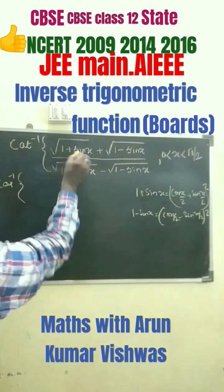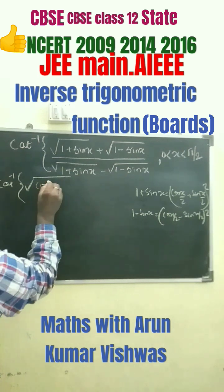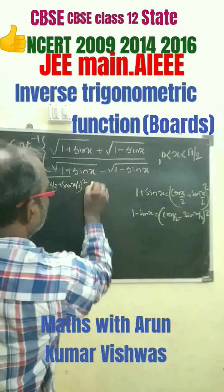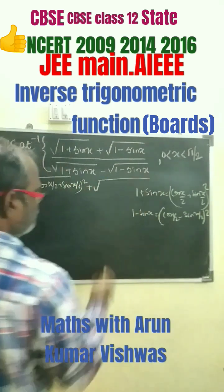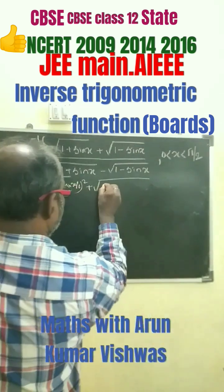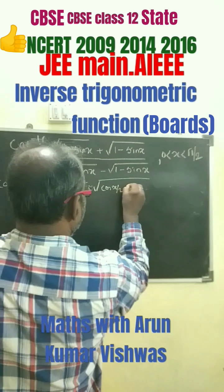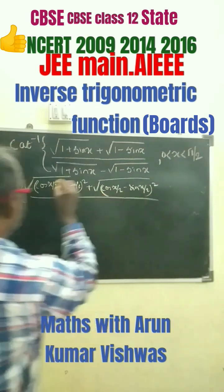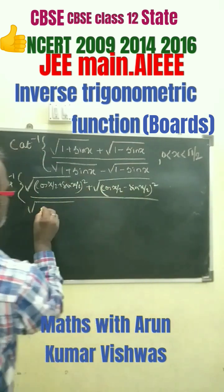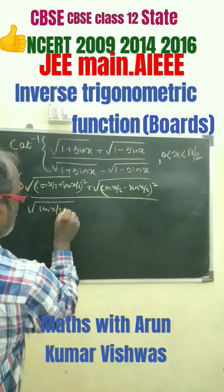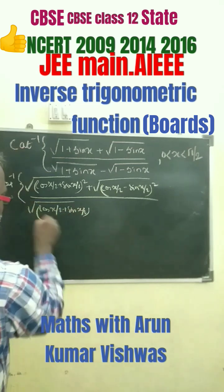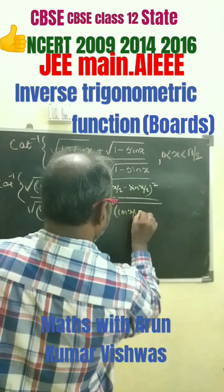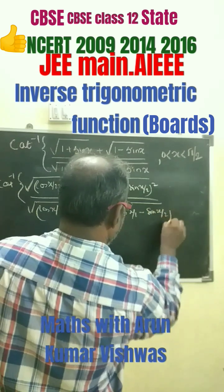So instead of this, we can write: inverse of root over [cos(x/2) plus sin(x/2)] whole square, plus root over [cos(x/2) minus sin(x/2)] whole square, divided by root over [cos(x/2) plus sin(x/2)] whole square minus root over [cos(x/2) minus sin(x/2)] whole square.